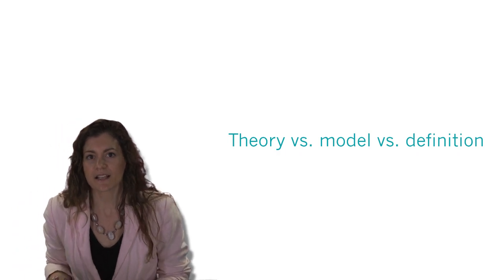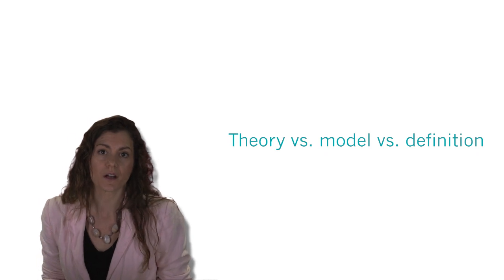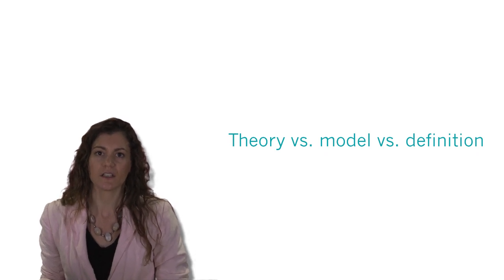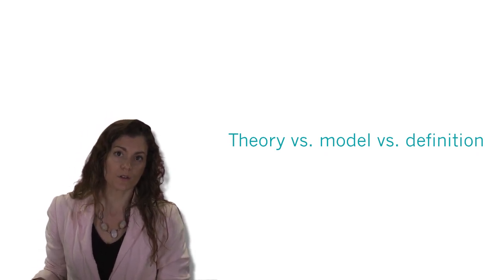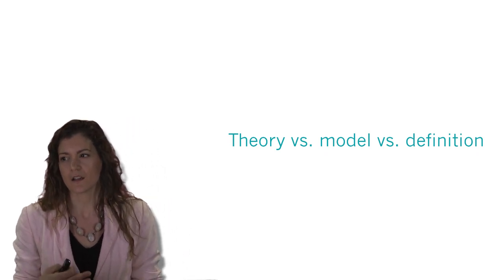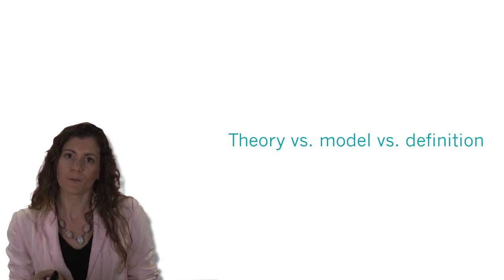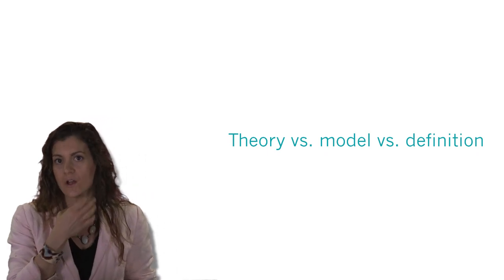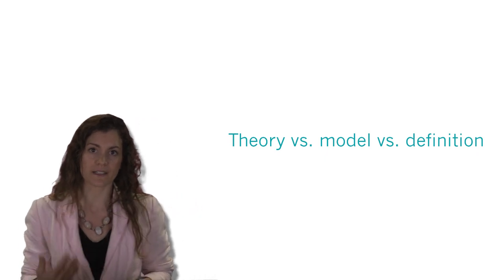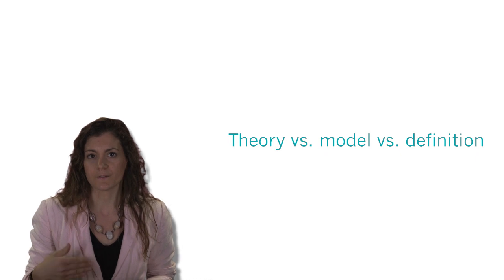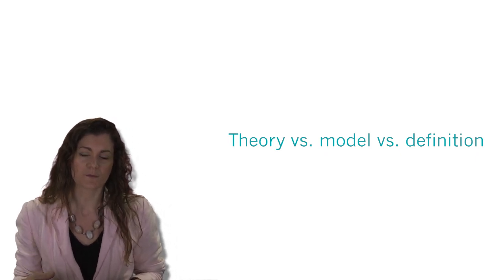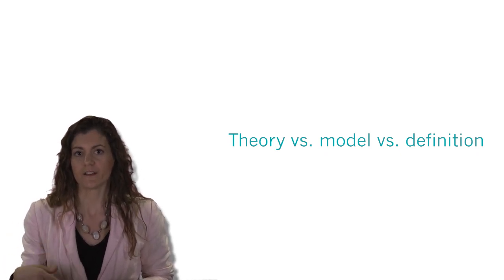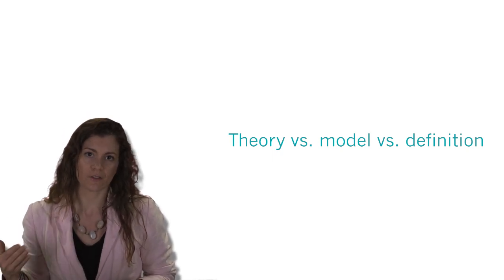We need to think about what's the value of a definition versus a theory or model. A lot of the traditional literature on origins of life has focused on defining life so that we can identify life on other worlds, but those definitions are really rather ad hoc. They're derived from observations of life on Earth — for example, we know life on Earth evolves, so we might have an evolutionary definition, or we know life is cellular, so we might assume all life requires cells. What we ultimately need is to build better models and theories that are more general, move beyond anthropocentric definitions, and become predictive theories for how life might look on other worlds.